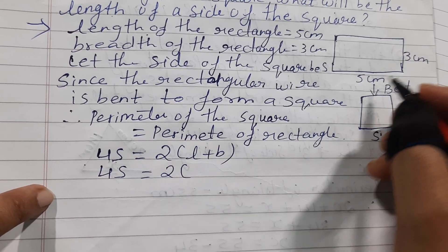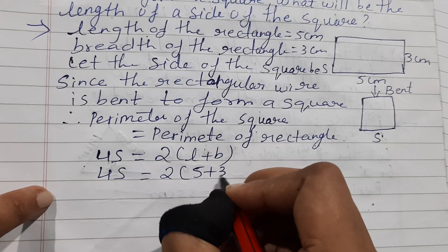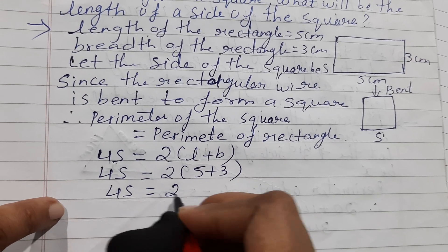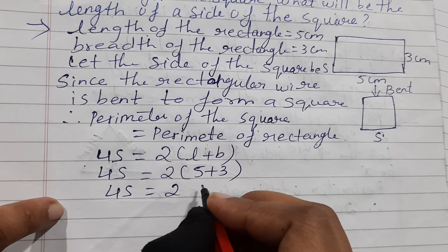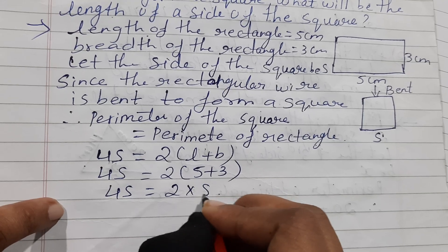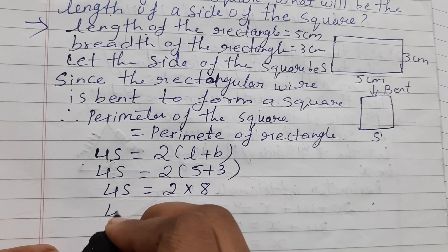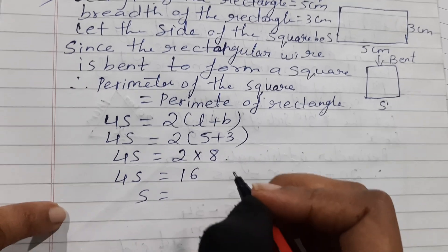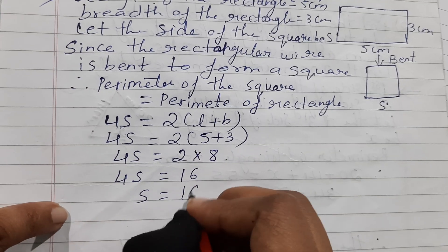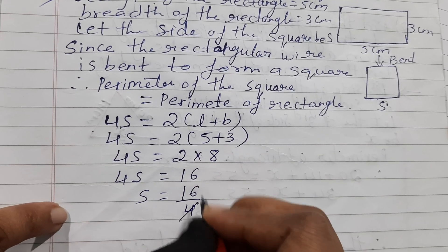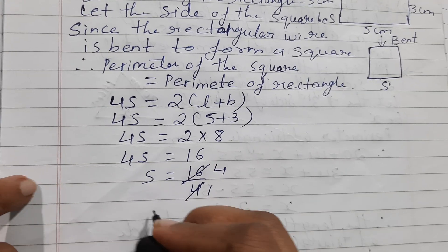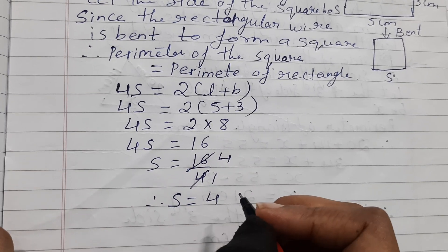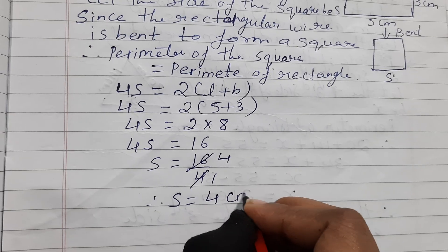The length is given as 5 and breadth is given as 3. So 4s equals 2 times 8, which is 16. Therefore s equals 16 divided by 4, and 4 fours are 16, so the side equals 4 centimeters.